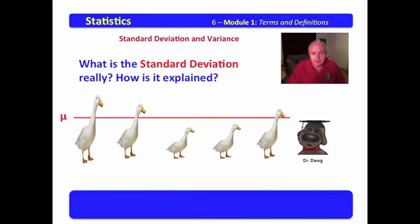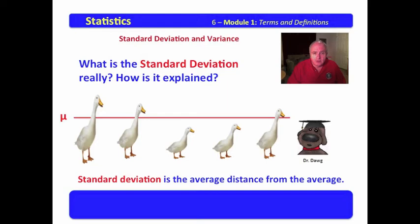Since we're representing these five ducks as a population, our average would be mu. Now, in order to calculate standard deviation, which is the average distance from the average, or the average distance from the mean, or the average distance from mu, we must examine distances from mu.